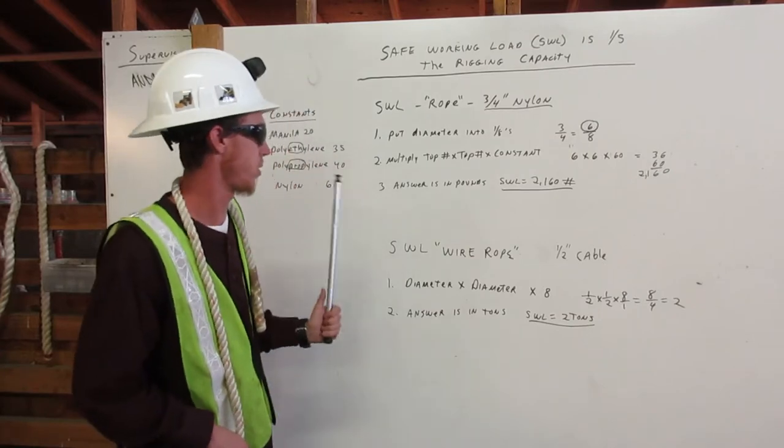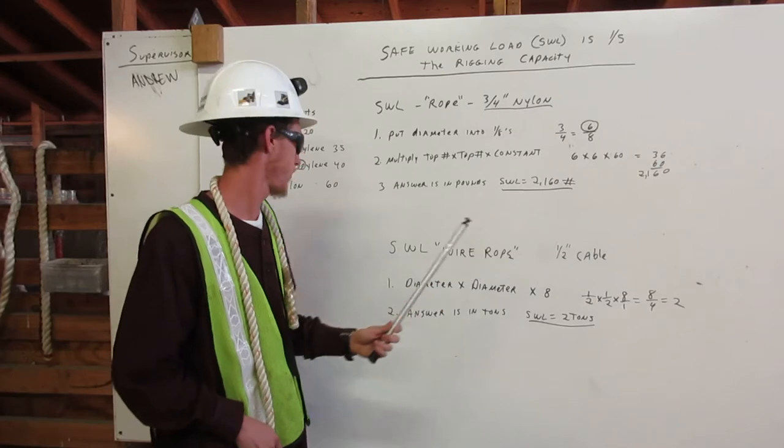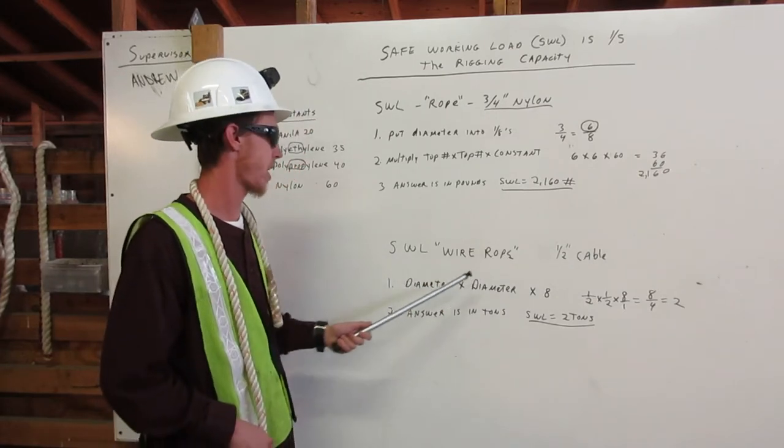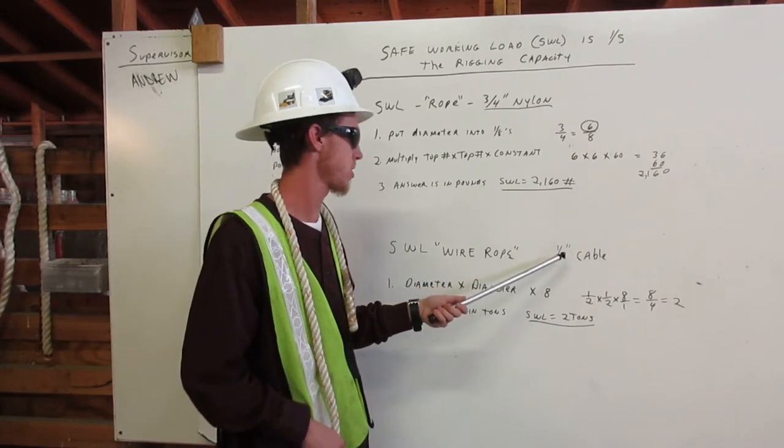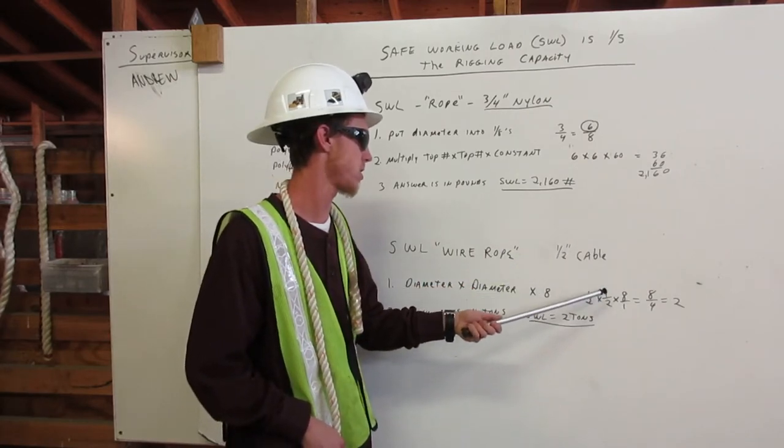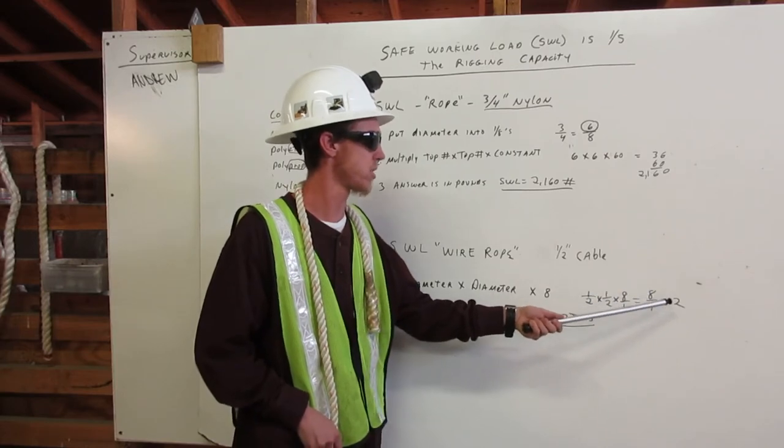Next, we are going to do the safe working load for wire rope, and it is half-inch cable. Number one, diameter times diameter times eight. So diameter is half-inch. So half-inch times half-inch times eight over one equals eight over four, which reduces down to two.